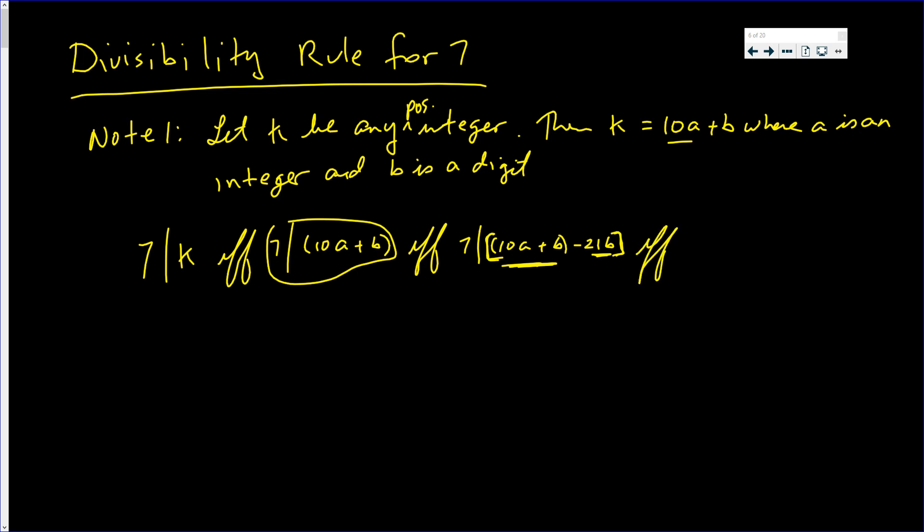If and only if 7 divides, I'm going to rewrite this. This is 10a minus 20b. If you take away 21b, then you add back 1b. In the end, you take away 20b.